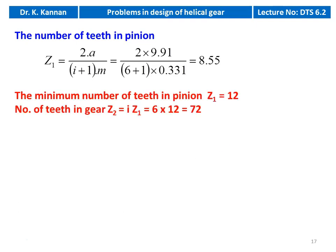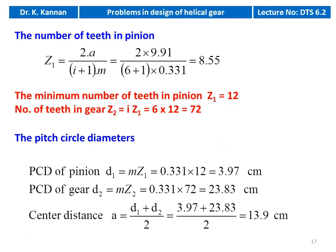We take minimum Z1 = 12. Number of teeth on gear Z2 = 6 × 12 = 72. PCD of pinion d1 = 0.331 × 12 = 3.97 cm. PCD of gear d2 = 0.331 × 72 = 23.83 cm. Center distance a = (3.97 + 23.83) / 2 = 13.9 cm.